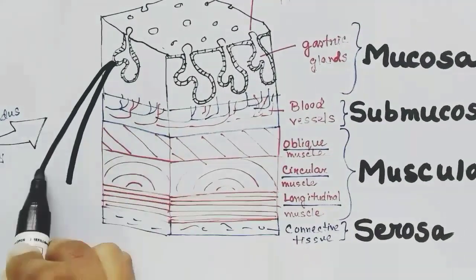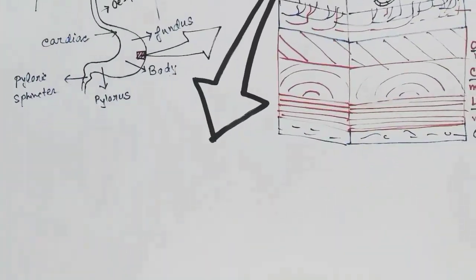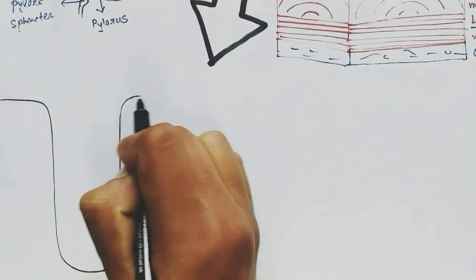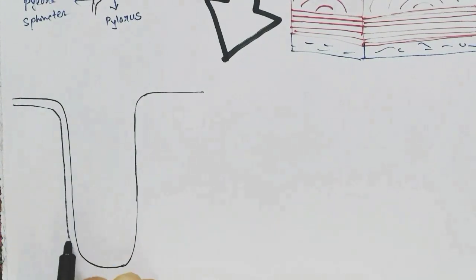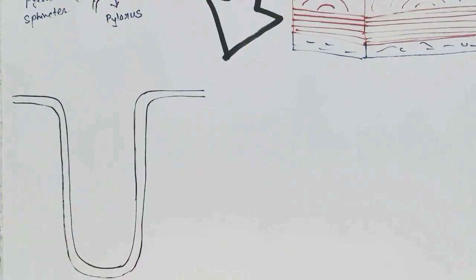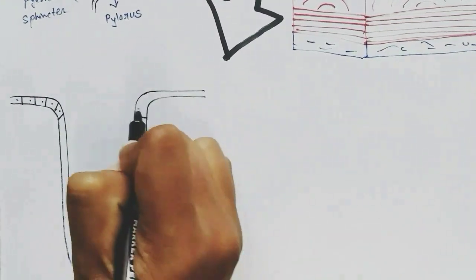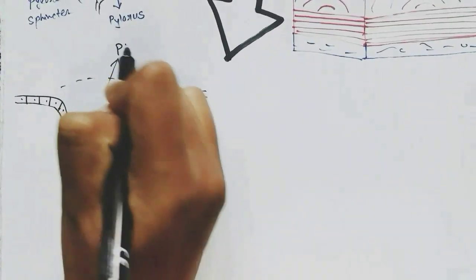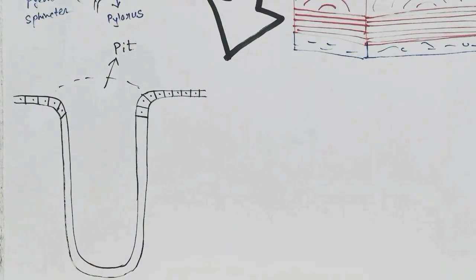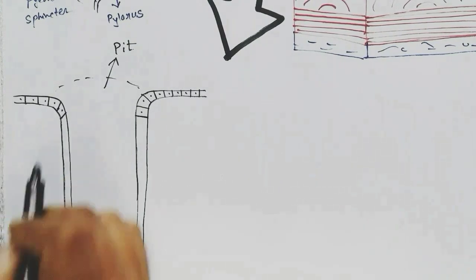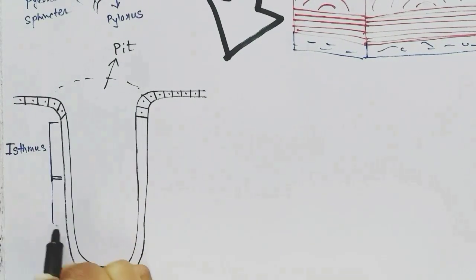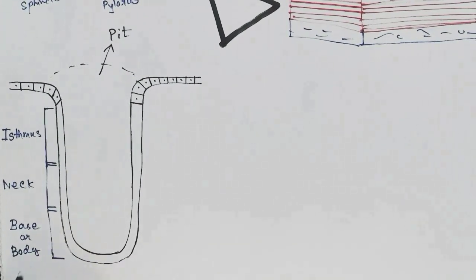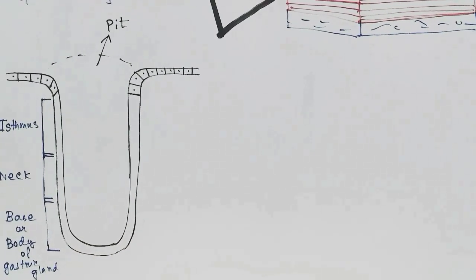Now if we zoom into the cells present in the gastric gland, I am drawing a simplified diagram of a gastric gland. The gastric gland has three parts: the isthmus, neck, and base or body of the gastric gland. The cells surrounding the gastric pit or the gastric gland are mucus cells.